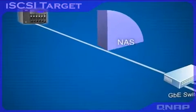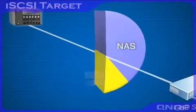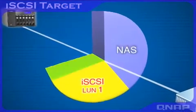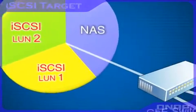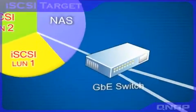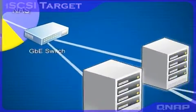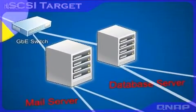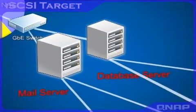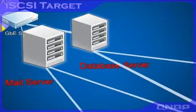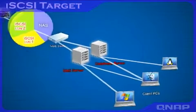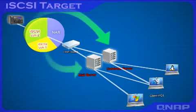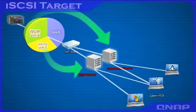The TS639 Pro can act as a NAS and iSCSI target server at the same time. Different iSCSI target LUNs can be defined as storage expansion or backup destinations for existing application servers, such as database servers and mail servers. It provides a cost-efficient iSCSI solution to set up an IP SAN. Thin provisioning is supported, enabling you to flexibly allocate the capacity of iSCSI targets.